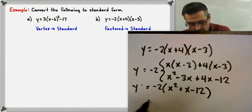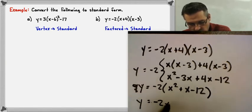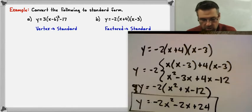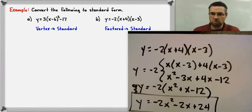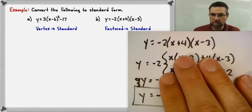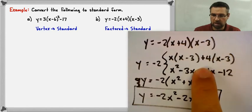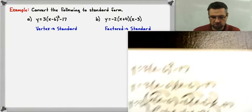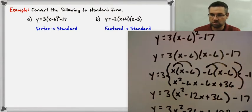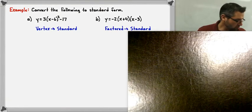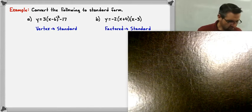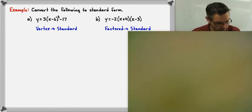We combine like terms: x squared plus x minus 12. Then we carry down the negative 2 and distribute, ending up with y equals negative 2x squared minus 2x plus 24. That is our standard form from factored form. Both of these problems are actually review — the factored form one from unit one multiplying binomials, and the vertex form one from unit two. Everything today is review that we're just formalizing and putting all together.